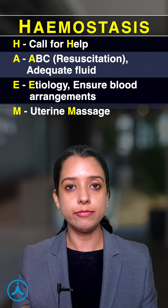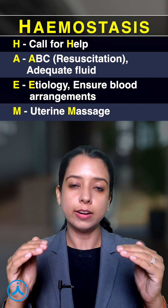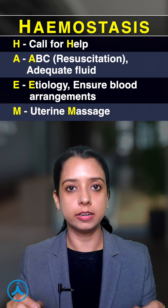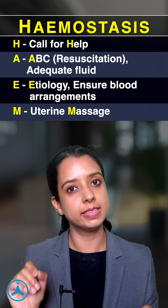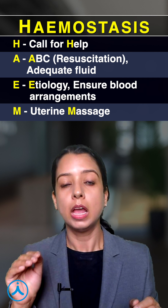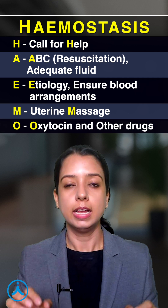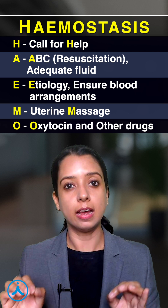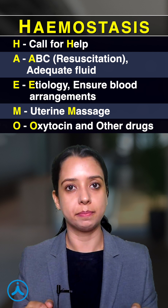M is for massage — after all the general management steps, the first specific step in PPH is uterine massage. O is for oxytocin — oxytocin and other medical management is the next step.